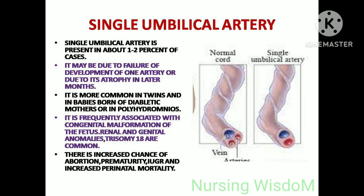Single umbilical artery is present in about one to two percent of cases. It may be due to failure of development of one artery or due to its atrophy in later months. It is more common in twins and in babies born of diabetic mothers or in cases of polyhydramnios. It is frequently associated with congenital malformations of the fetus, renal and genital anomalies, and trisomy 18. There is an increased chance of abortion, prematurity, IUGR, and increased perinatal mortality.